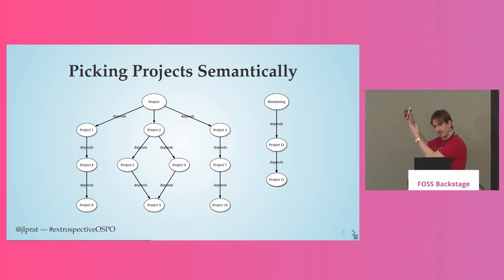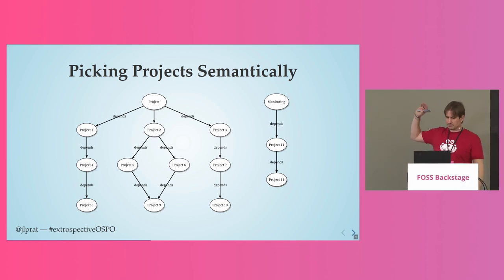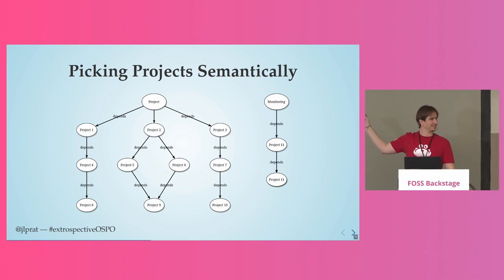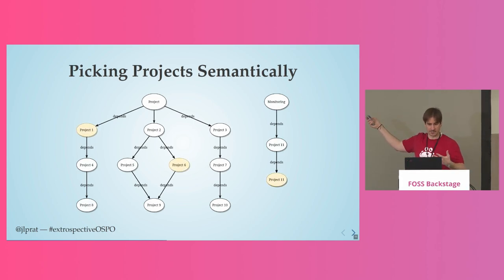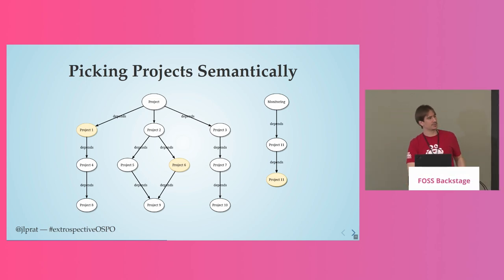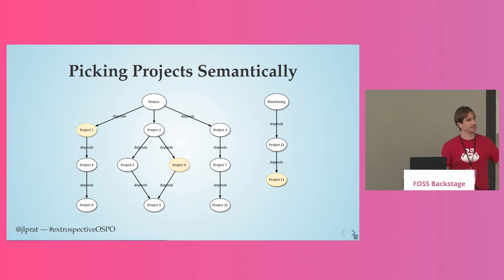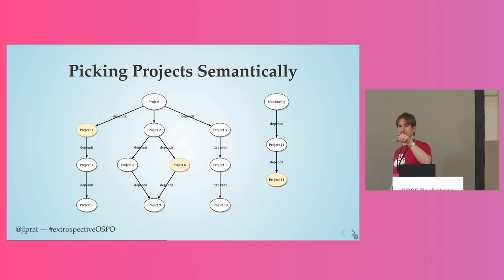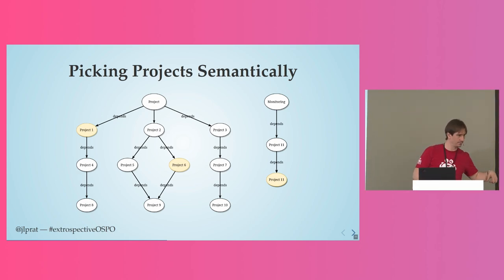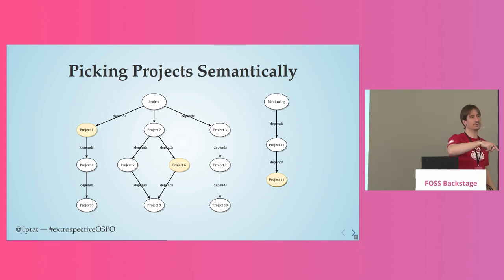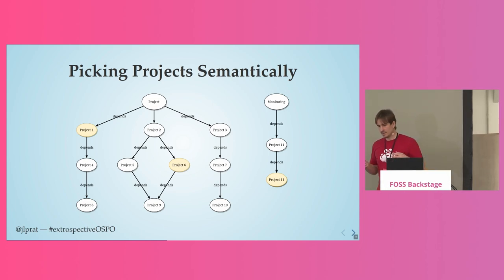For example, take a simplified dependency graph. In this case we'd say project one, project six, and project eleven are projects we really depend on, with no replacements — we could not live without them. Those are the ones we start staffing. Then we have a second level of impact, third level, fourth level, and so on. We staff people based on that criteria. It requires a clear understanding of what your business relies on, but if you can do it, this approach works well.